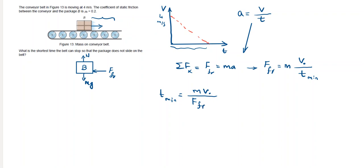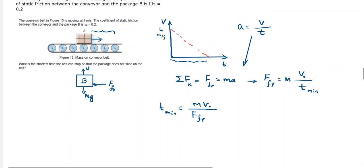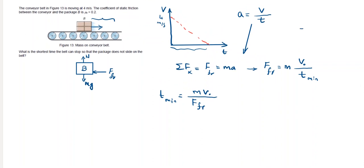And we know that force of friction is equal to μs times N, this is the formula. And we know by looking at the free body diagram that N is equal to mg.